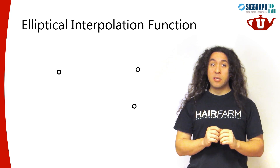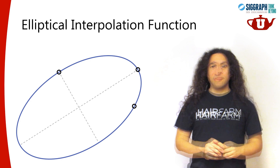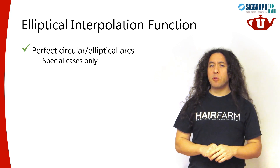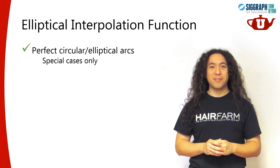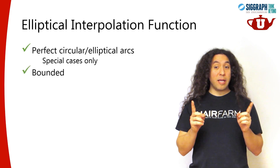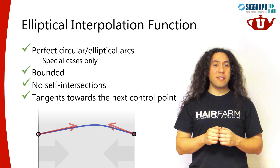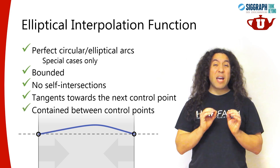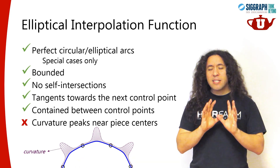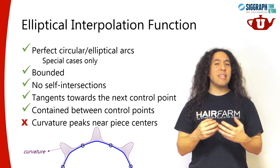We can do better using an elliptical interpolation function. Three points in space do not uniquely define an ellipse, so we introduce additional constraints by placing two of the control points along the primary axis of the ellipse — please see the paper for details. Curves with the elliptical interpolation function can form perfect circles and ellipses, but the control points need to be carefully placed. Most other properties of the curves formed by the elliptical interpolation function are far superior: the curves are bounded by 21% of the distance between the two control points, they cannot form self-intersecting pieces, the tangents are always towards the next control point, and the curve pieces are contained within the region between the two control points. However, they have one rather undesirable feature: they can form sharp curvature spikes near the centers of the curve pieces. These form visually recognizable features that don't actually exist in the given control point data.